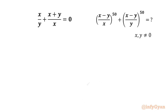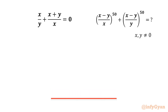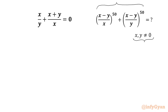Hello everyone, welcome back to Infigyan. Today in this video we have one very interesting question from algebra. We have to evaluate the expression (x minus y)/x whole power 50 plus (x minus y)/y whole power 50, given that x and y are non-zero, and the known equation is x/y plus (x+y)/x equals 0. Let us get started with the given equation.